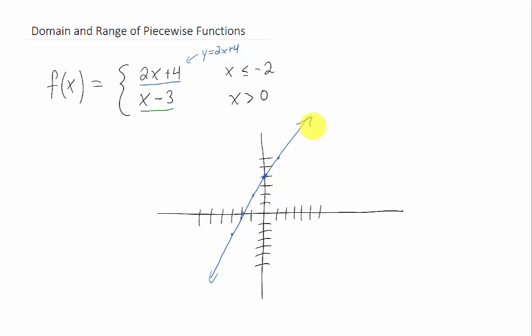However, with a piecewise function, we're told that this line is only the function for x values that are less than or equal to negative 2. Now this function is only really that piece for all of these x values to the left. So I'm going to erase all of the pieces of the line where x is greater than negative 2.